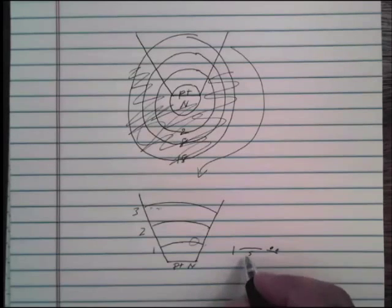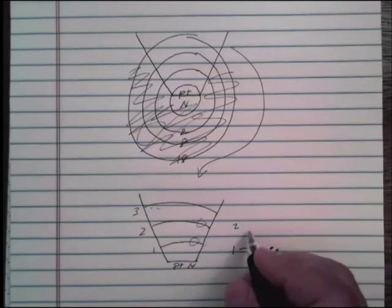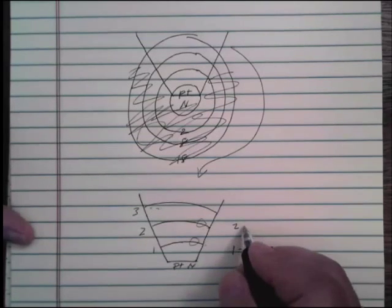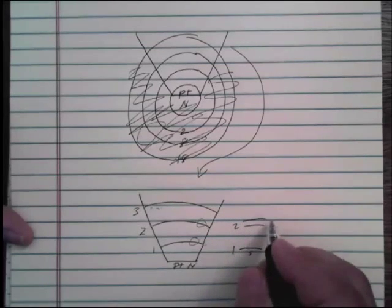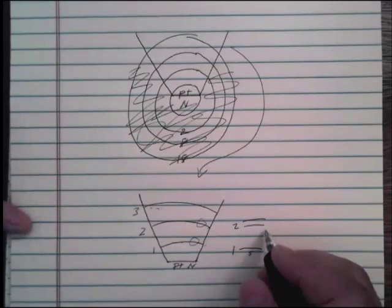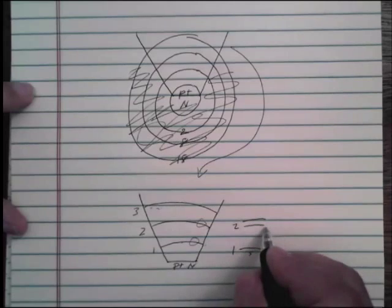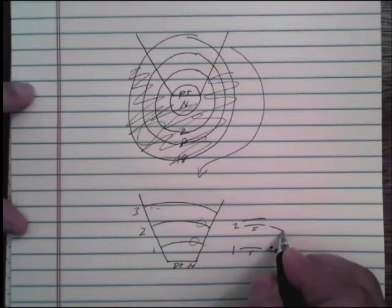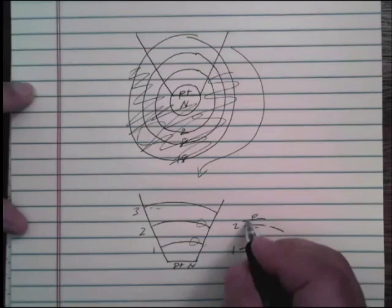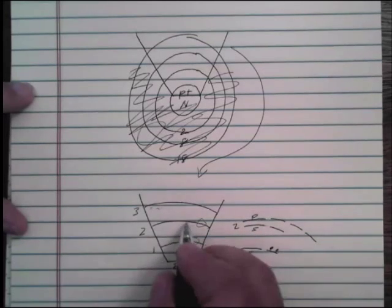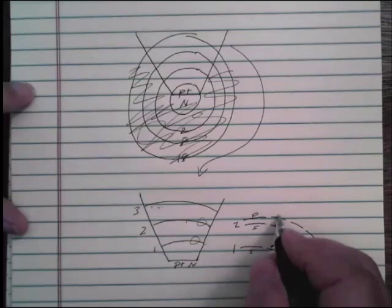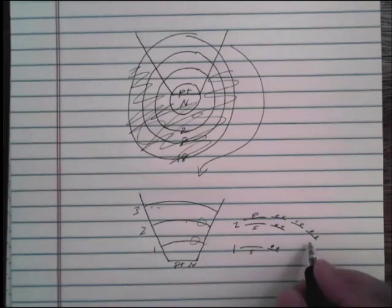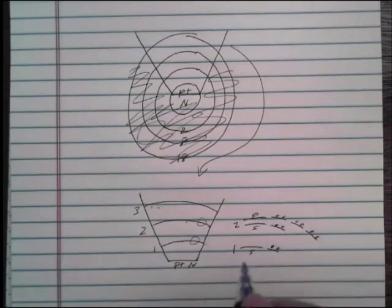Moving to the second level: it has more energy, so it contains more electrons. The second energy level has two sublevels, each with a different number of orbitals. The lower sublevel is an S sublevel with one orbital, and there's also a P sublevel with three orbitals. With two electrons in each orbital, the S sublevel holds two electrons and the P sublevel holds six electrons, giving a total of eight electrons in the second energy level.